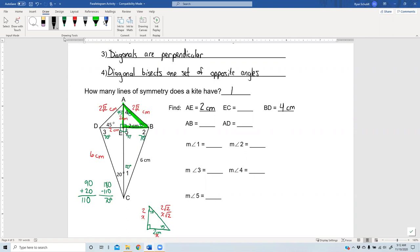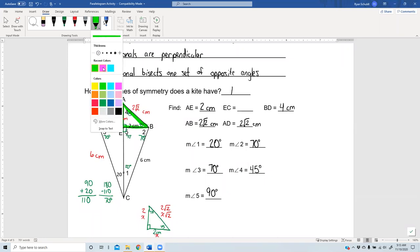AB, I found that to be two square root of two centimeters. AD, well that's also two square root of two centimeters. Measure of angle one, we said it was 20 degrees. Measure of angle two, we said it was 70 degrees. Angle three was also 70. Angle four was 45. Angle five was 90. So it looks like the only thing we haven't done yet is find EC.